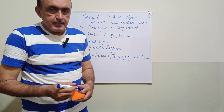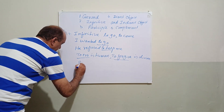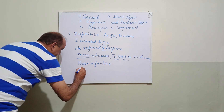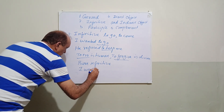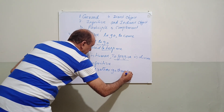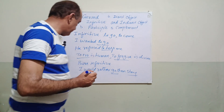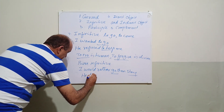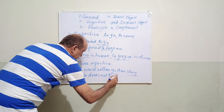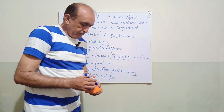There is another term: bare infinitive. Bare means without 'to'. Examples of bare infinitive: I would rather go than stay — go and stay are bare infinitives. Another example: he dares not do — here 'do' is a bare infinitive.